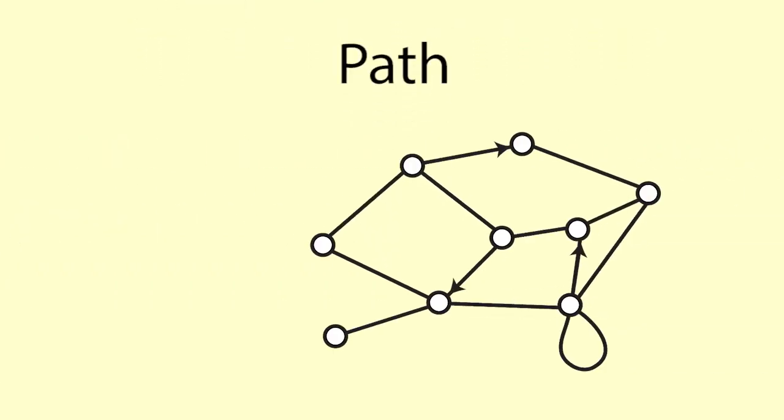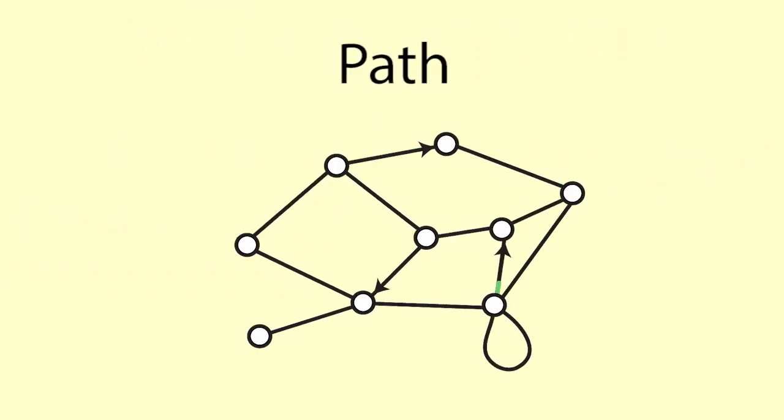Path. A path is a sequence of joined arcs moving through a network. If the network has directed arcs, the directions must be maintained. A path might only visit some nodes, might visit all nodes, or might visit nodes more than once.